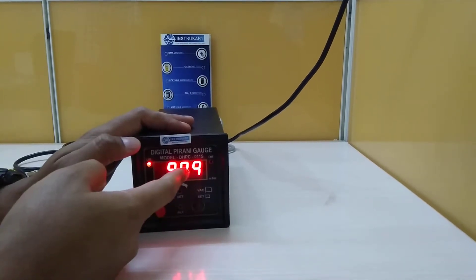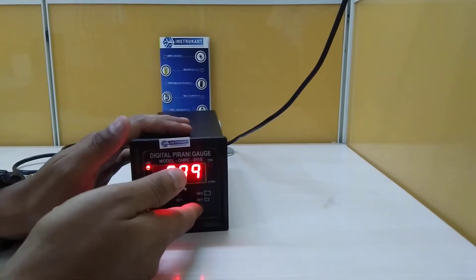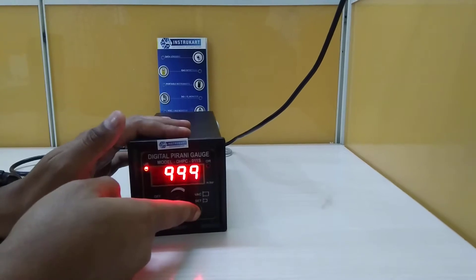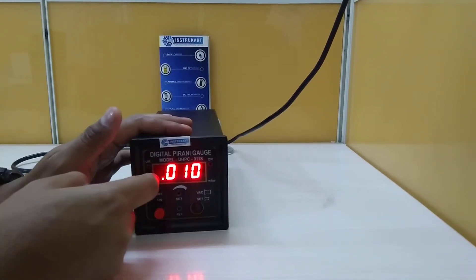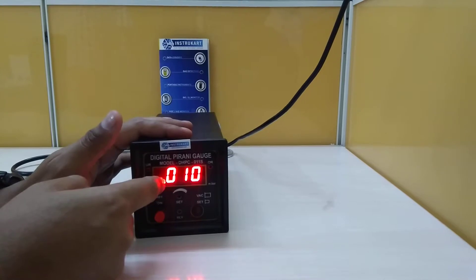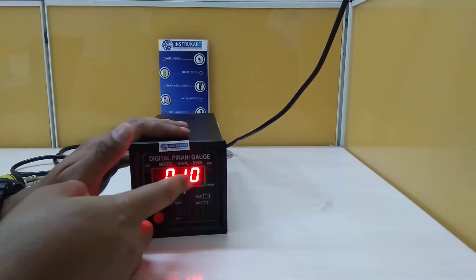We can see this is on and off of course for the mains and we have vacuum and set. So currently it's showing 999 which is the open condition and this is the set which is 0.010.